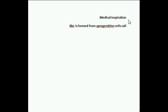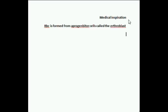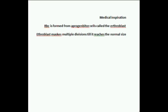First we need to know that RBCs are formed from a progenitor cell called the erythroblast. The erythroblast is the stem cell for RBCs and it usually undergoes multiple divisions to reach its normal size, which is from 80 to 100 micrometer cubed. So erythrocytes make multiple divisions until they reach their normal size.